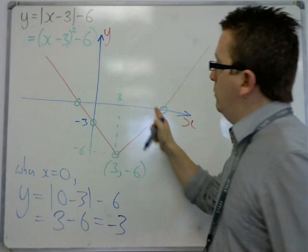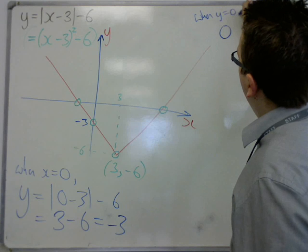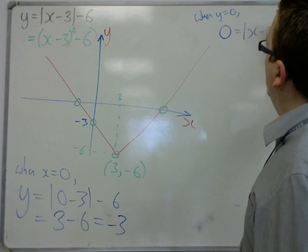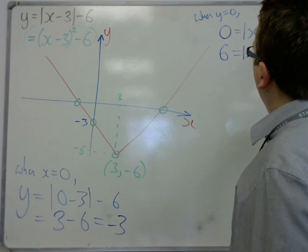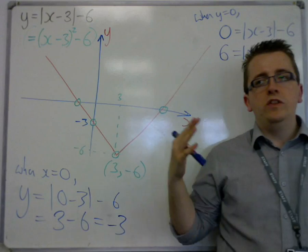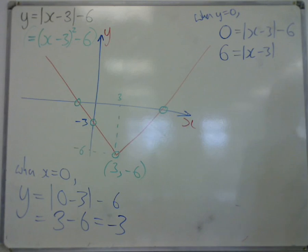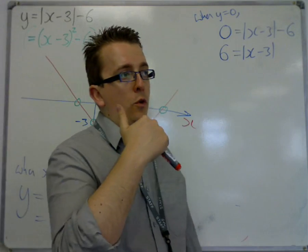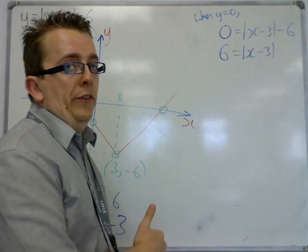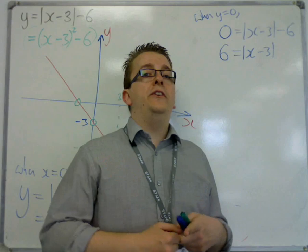And we also want to find out where it crosses the x-axis. Well, that's when y is 0. So when y is 0, 0 is equal to |x - 3| - 6. So if we add 6 to both sides, we get to this equation. Now, we haven't met an equation with a modulus sign in it in order to solve it. So we can see that there are going to be two solutions. And there are a couple of methods that you could try.